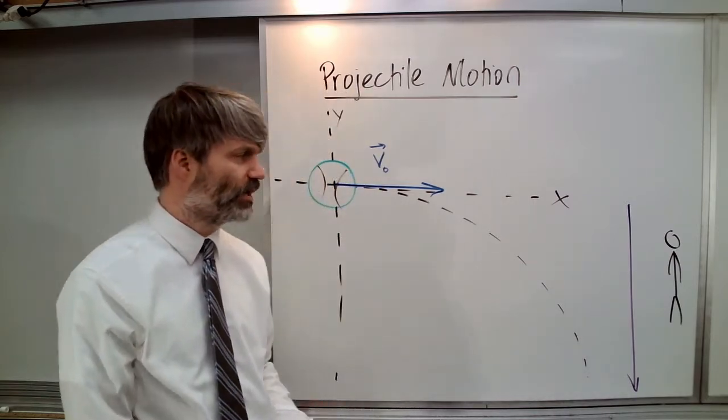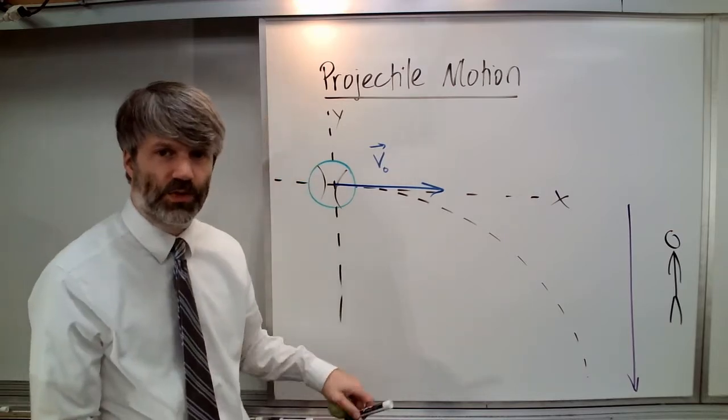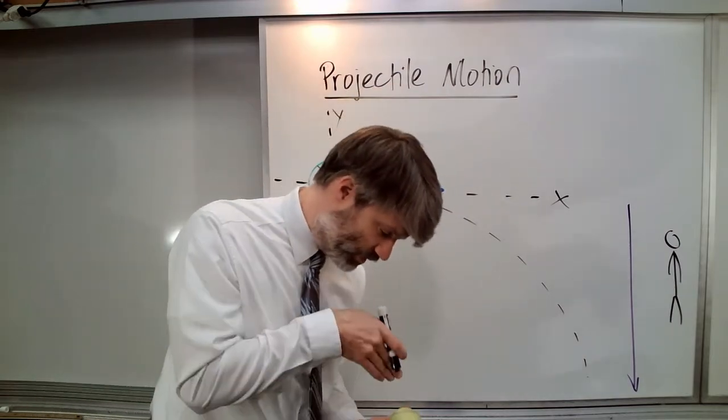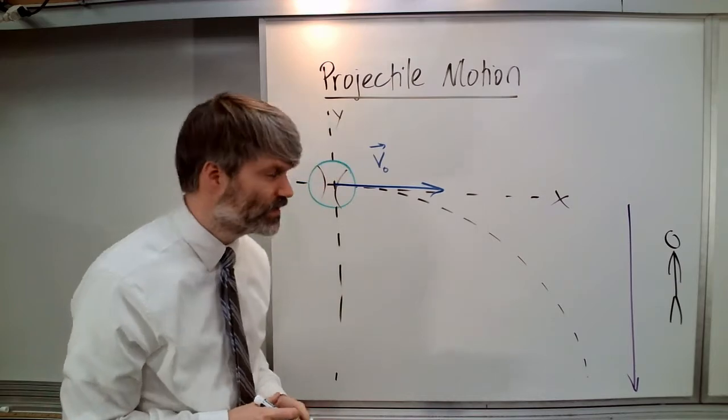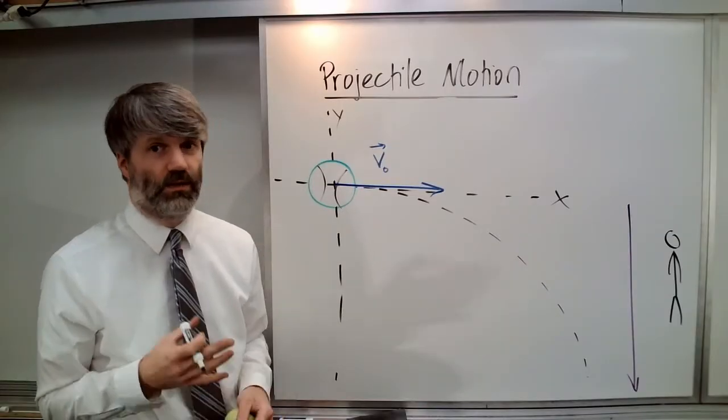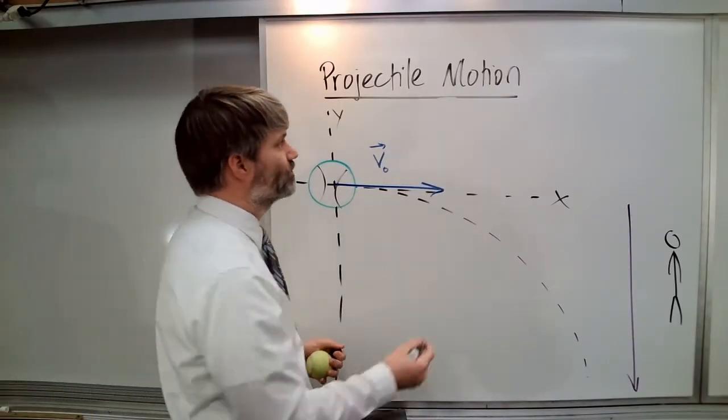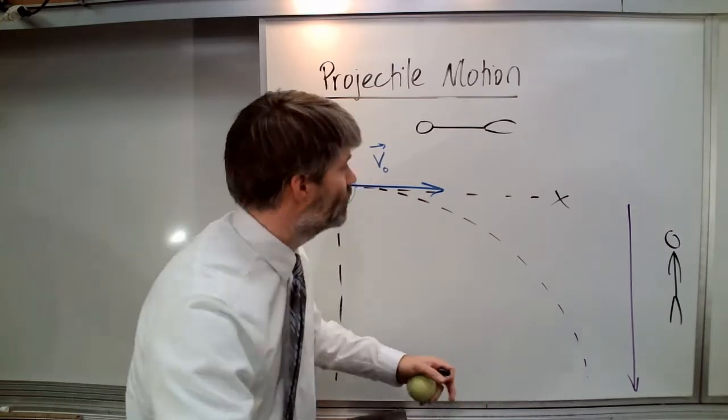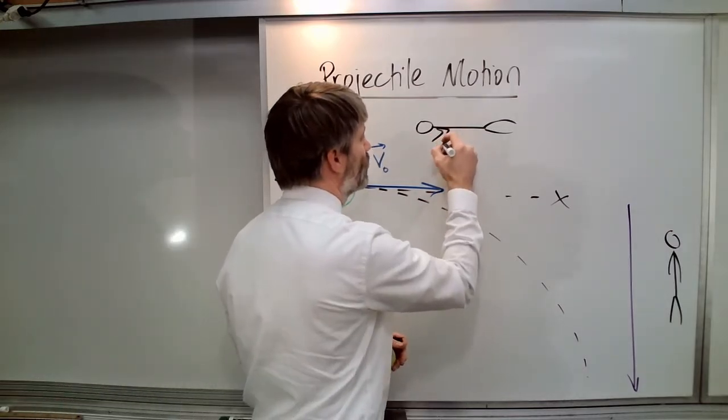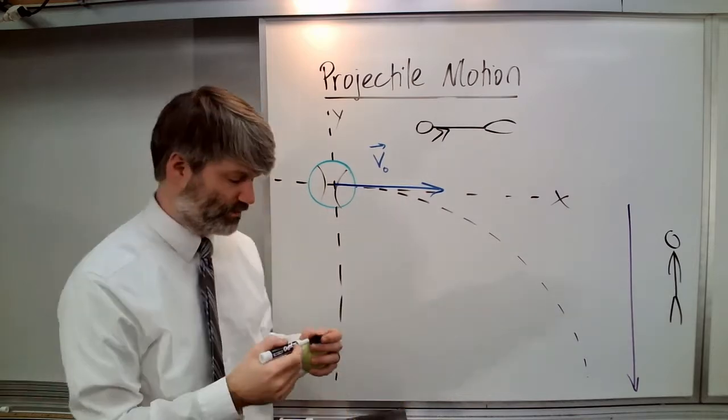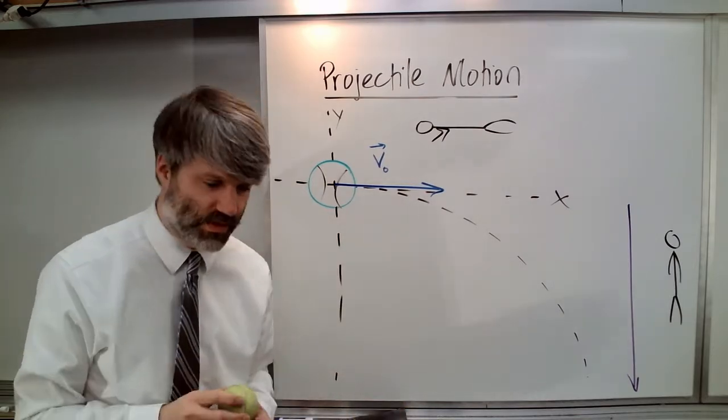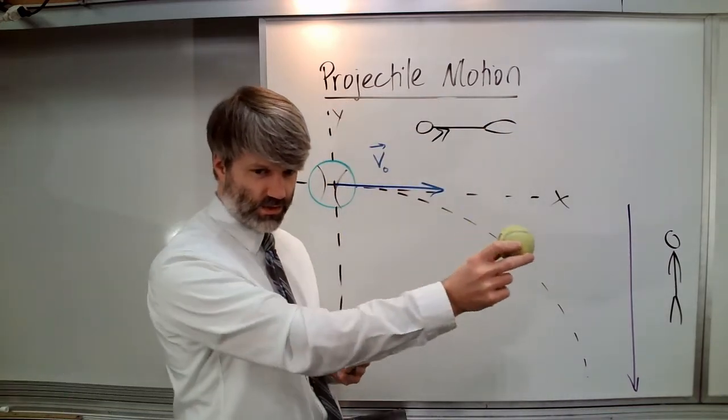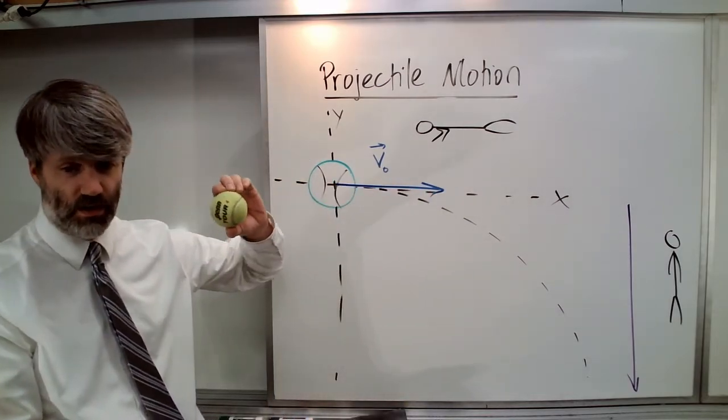Now we're going to have another person, this person who is somehow up above looking down on the object in its motion like so. This person standing here, he's just kind of floating over, watching. Now what does he see? He sees an object also going in just a straight line.